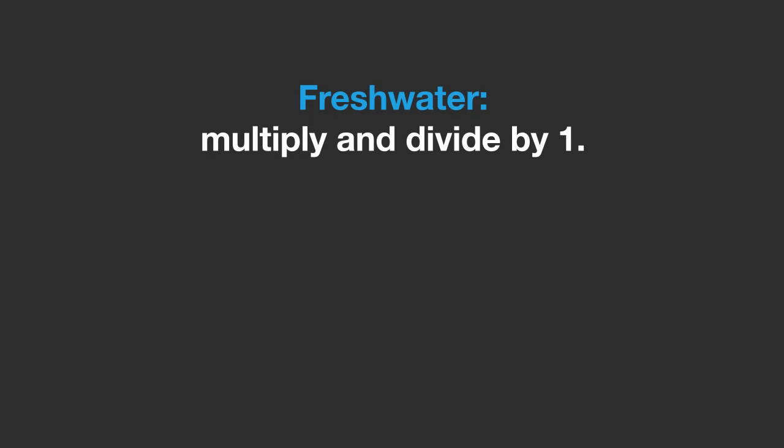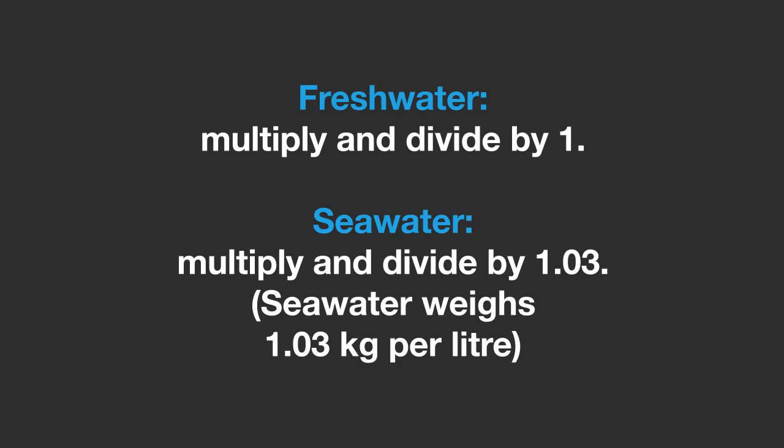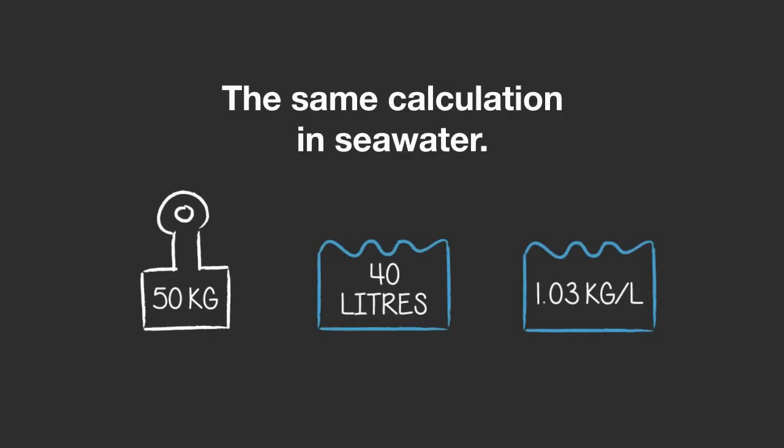In freshwater it is simple. In seawater you do exactly the same, but to find out how much the displaced water weighs you have to multiply and divide by 1.03 kg instead of just 1. Let's do the same calculation again but this time in seawater so you can see the difference.